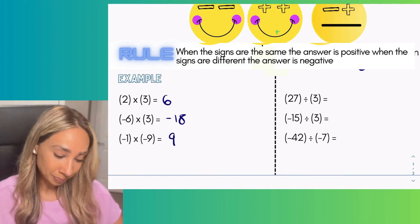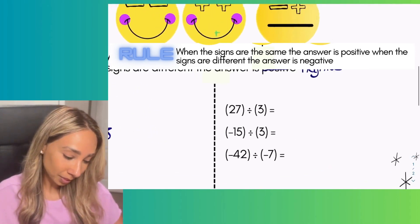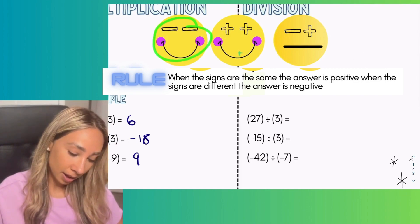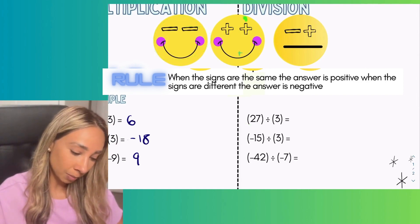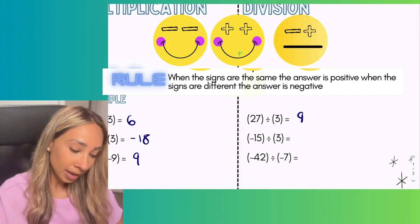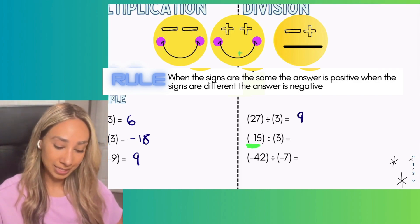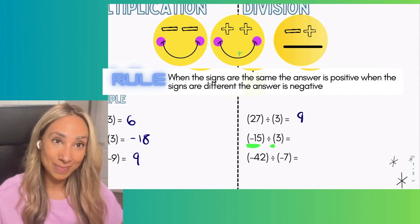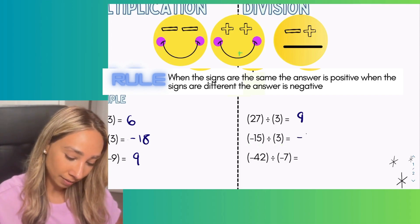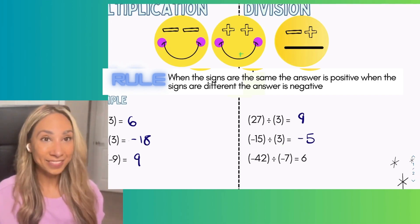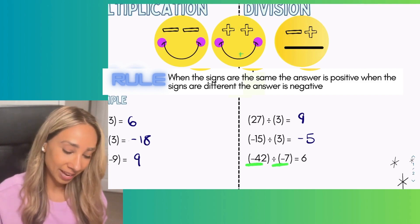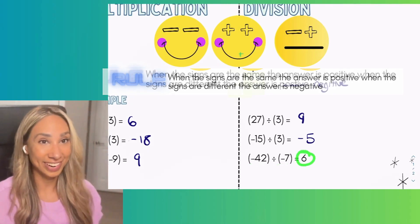Same idea for division. First: the signs are the same — both positive — so that leaves me with nine. Next: negative fifteen divided by three — the signs are different, leaving me with negative five. In the final example, both signs are negative — the same — so that leaves us with positive six.